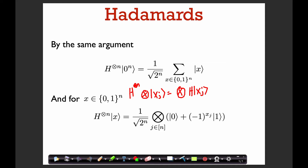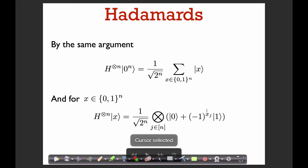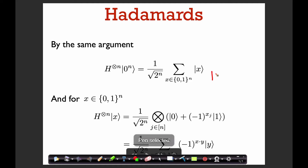We have the tensor product of that, and now we need to expand this tensor product. When we expand it, we're going to get a superposition over all n-bit strings — every possible combination of 0 and 1 — but now we have this phase on the |1⟩ state. So we need to do a little computation to figure out what the amplitude is going to be in front of a given computational basis state. Let's consider some state |y⟩, an n-bit string, and figure out what the amplitude on |y⟩ is going to be.